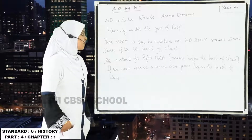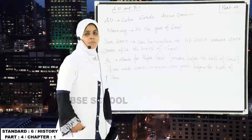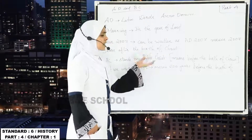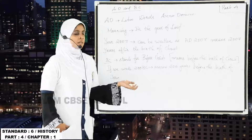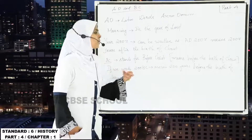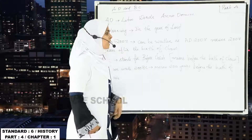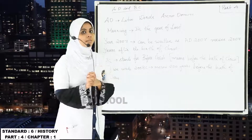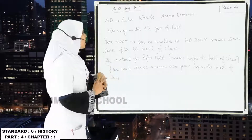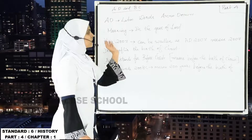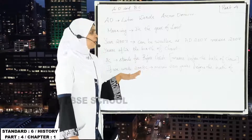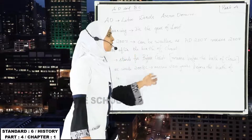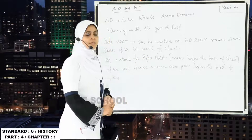The next one is BC. BC stands for Before Christ, which means before the birth of Christ. AD stands for after Christ. AD means after the birth of the Lord, or in the year of the Lord. BC stands for Before Christ, which means before the birth of Christ.